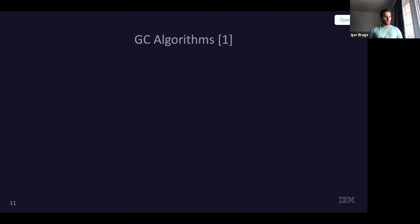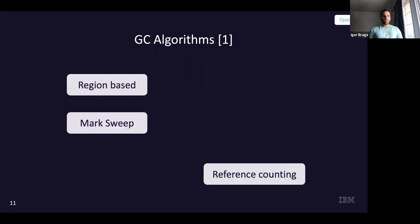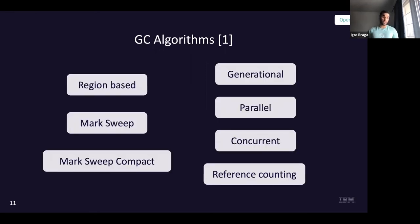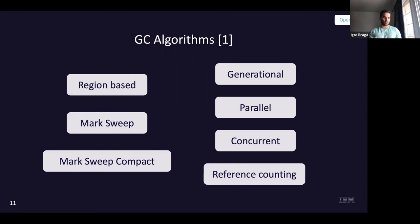Now we have an idea of what GC is. These are some of the known algorithms out there, and I'm going to explain them through the view of OpenJ9. One that I'm not going to explain through OpenJ9 is reference counting — so just to get our feet wet, let's talk about what reference counting is.